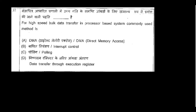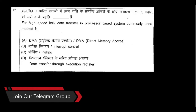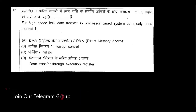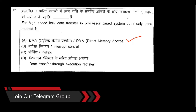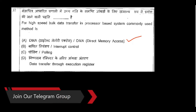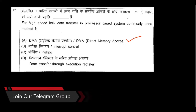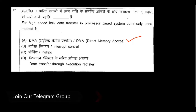Question 32: For high-speed bulk data transfer in a processor-based system, the commonly used method is Direct Memory Access (DMA). Not interrupt control, not polling — those allow only small amounts of data transfer. For high bulk data, we use Direct Memory Access.